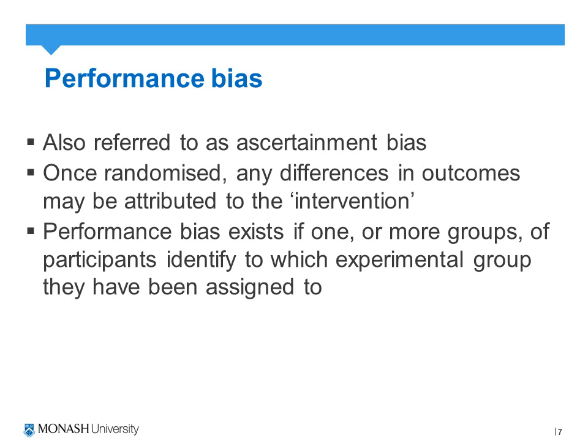The second bias we'll consider is performance bias, sometimes referred to as ascertainment bias. In a trial, the first step is to recruit and allocate participants to one group or another — that's where selection bias comes in. The second process, once participants have been allocated, is to implement the intervention or the control arm, and this is where performance bias can occur. It's most commonly an issue when patients can identify whether they're in the intervention or comparison group once treatment has commenced.